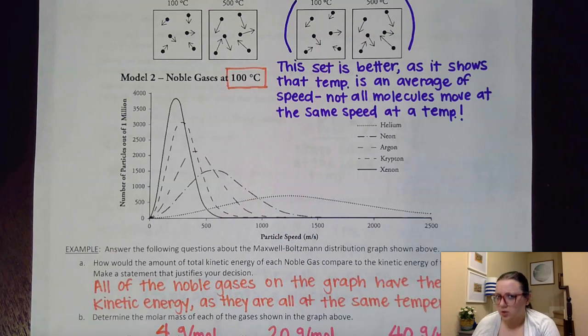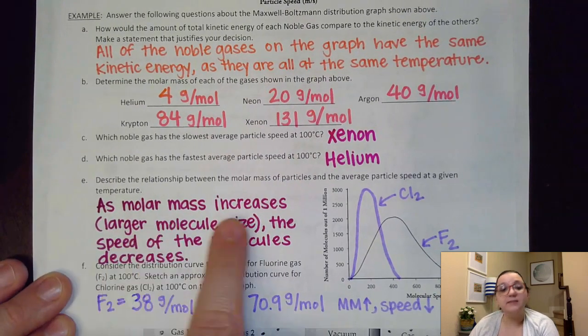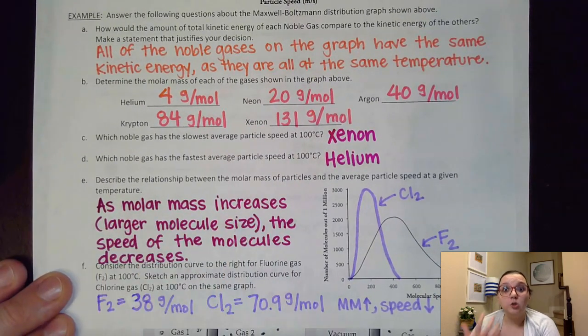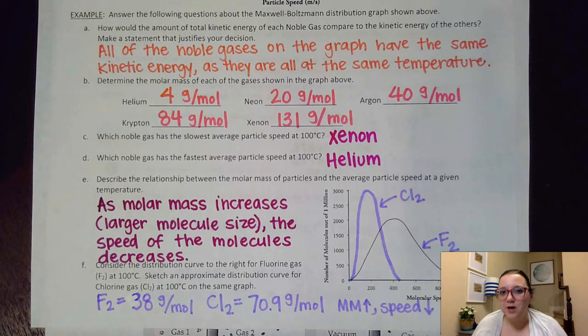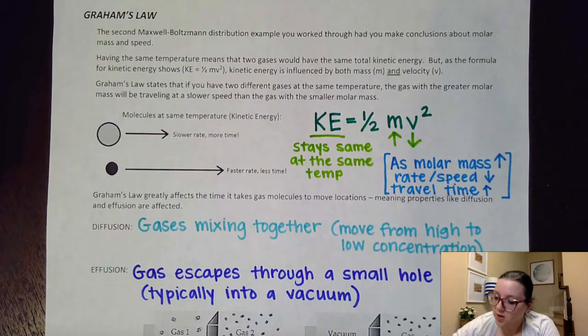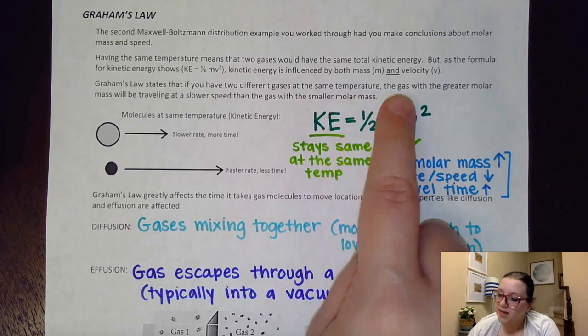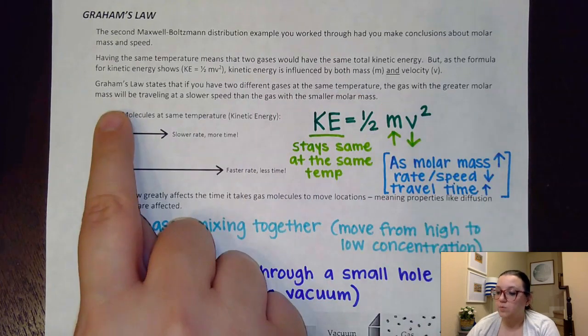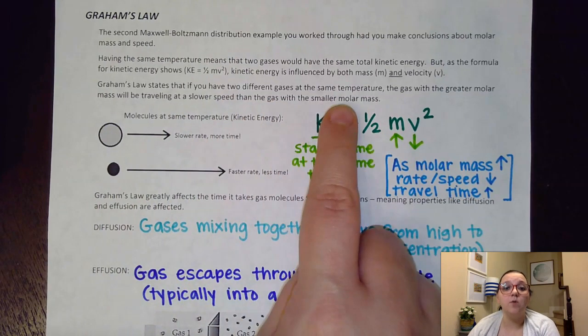And so we wrote a conclusion on those notes: as molar mass increases, as we get a larger molecule size, the speed of the molecules decreases. And without knowing it, what you actually wrote here is what Graham's Law states, that as long as I have two different gases at the same temperature, the gas with the greater molar mass will be traveling at a slower speed than the gas with the smaller molar mass.